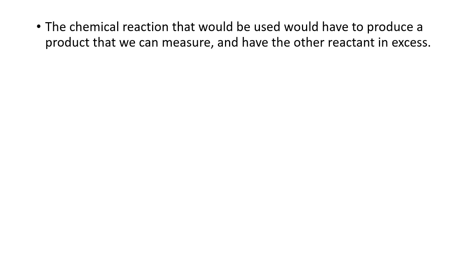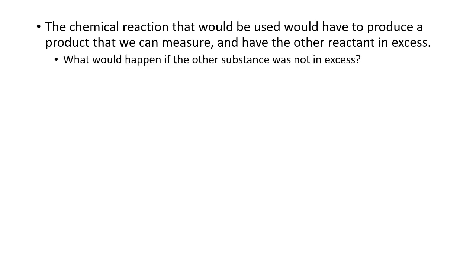A chemical reaction used would have to produce a product that we can measure, and the other reactant would have to be in excess. So you've got your mixture, you've got your desired substance, and then we're going to react it with something else that produces a measurable product — and that other substance has to be in excess.